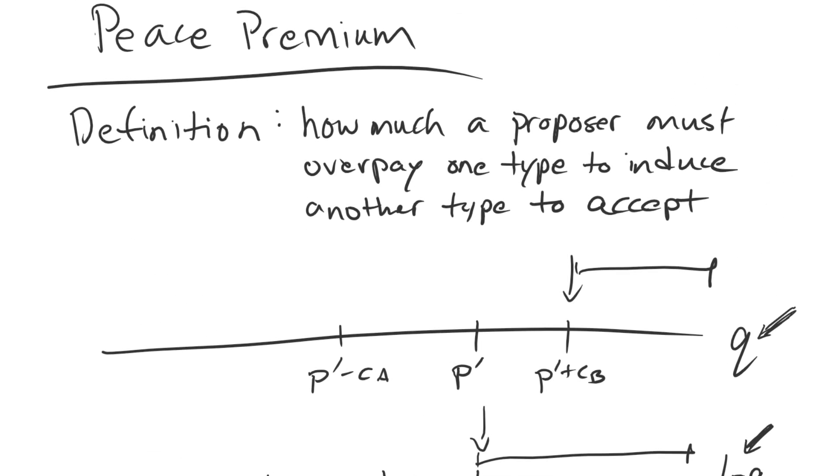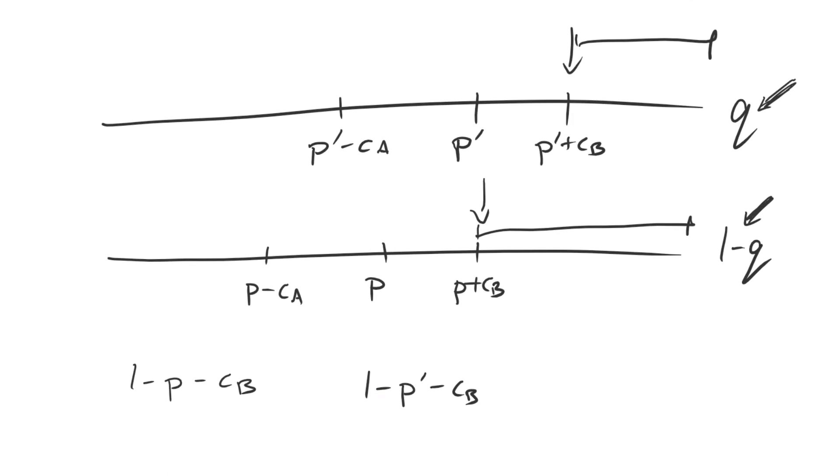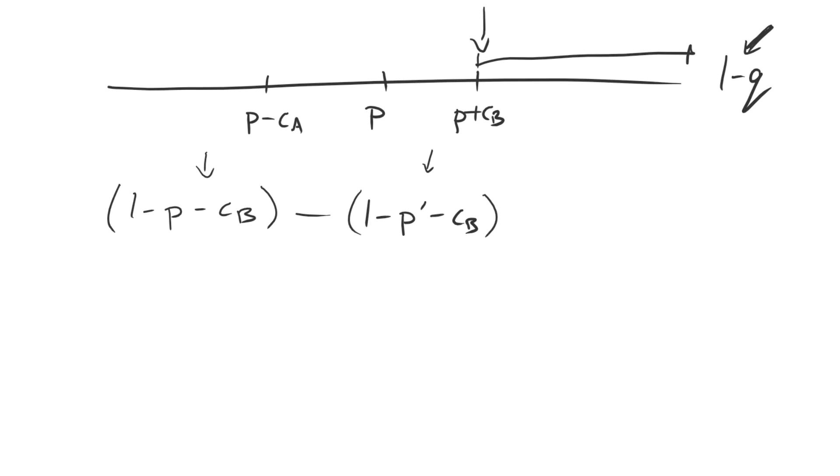So if we go back to our definition, how much a proposer must overpay one type to induce another type to accept, this type is making more than this type is. So in order to get this type to accept, the first type to accept, we must overpay this type by the difference in the two values for war. We can measure that peace premium by simply subtracting one value from the other. If we distribute the negative sign, minus 1 plus P prime plus CB, the 1s cancel, the CBs cancel, and we're left with our peace premium of P prime minus P.